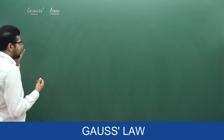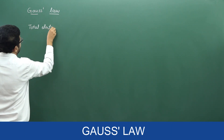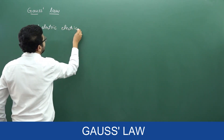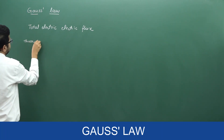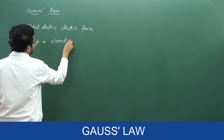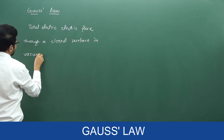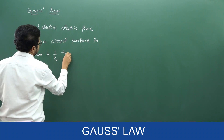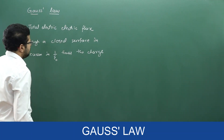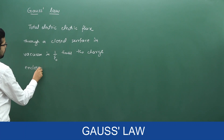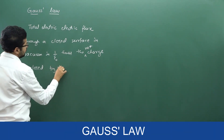Let me write the definition of Gauss law. The total electric flux through a closed surface in vacuum is 1 by epsilon naught times the net charge enclosed by the surface.